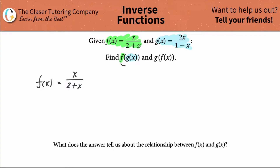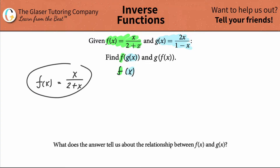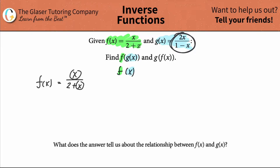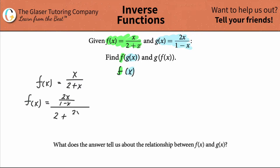Now what I'm going to do is look to the inner function. What this is basically telling me to do is take the g of x function and plug it in for x in the overall f of x function. That's why I start by writing the f of x function first. So everywhere I see x, I plug in the whole g of x. So f of x is going to be equal to two x over one minus x — that takes care of the x — divided by two plus two x over one minus x.